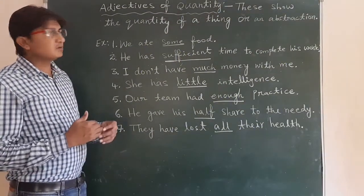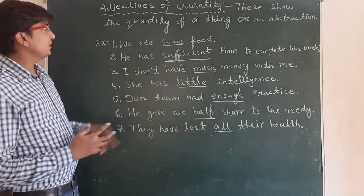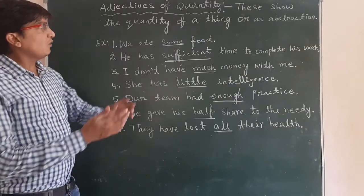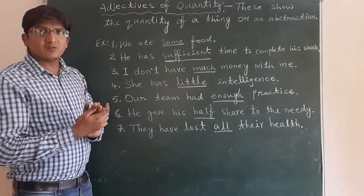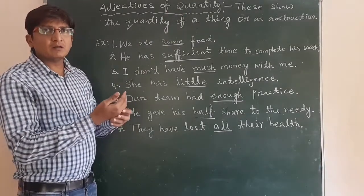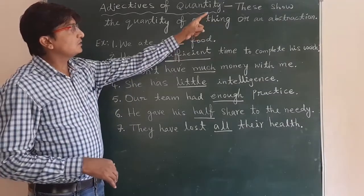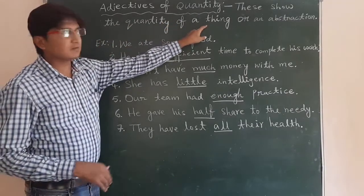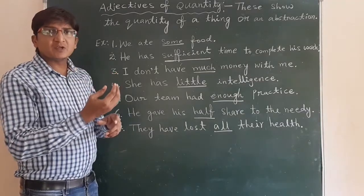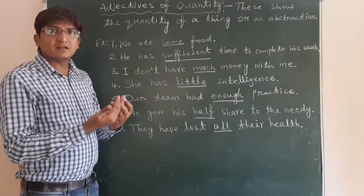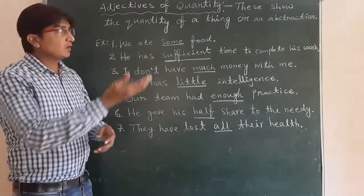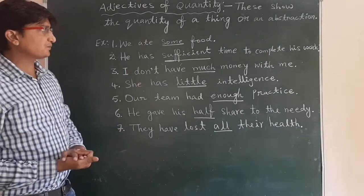Hello friends. In this video we are going to learn one more kind of adjectives, that is adjectives of quantity. The adjectives that tell about quantity are called adjectives of quantity. These show the quantity of a thing, substance, or an abstraction — something we can't see or touch but we feel, like abstract nouns, ideas. To refer to those also, we use adjectives of quantity.